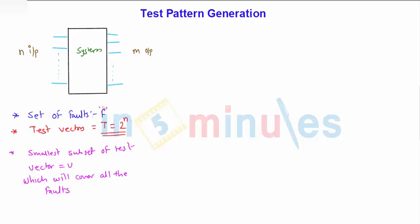Now it is not possible to cover all the faults with the test vectors, but we will find out some test vectors out of 2^n. Suppose we have 4 inputs, so 2^4, that is 16 test vectors are there. So instead of having 16 test vectors, we will choose 5 test vectors which will decide or find out all the faults or almost all the faults.